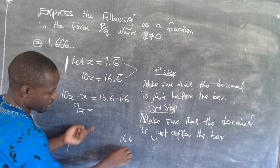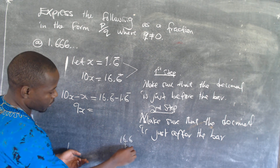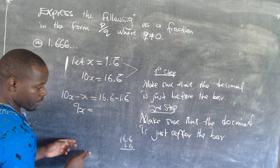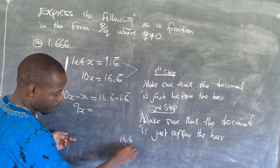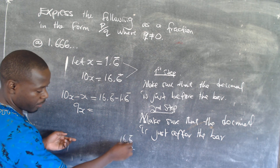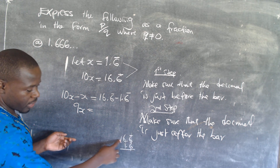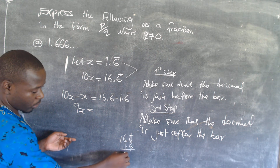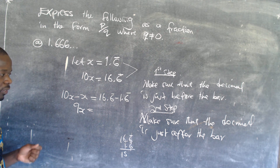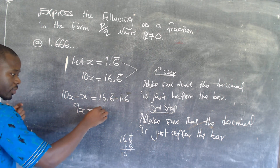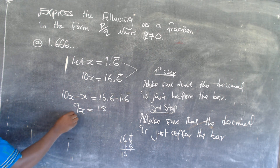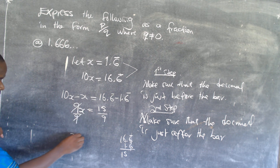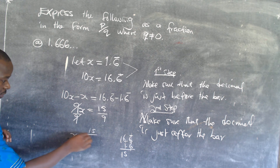So 9x is equal to 16.6̄ minus 1.6̄. Since the repeating part .6̄ minus .6̄ gives 0, you just remain with 16 minus 1, which is 15. So 9x equals 15. Then you divide by 9 to find x, giving x is equal to 15 over 9.